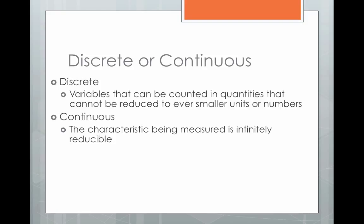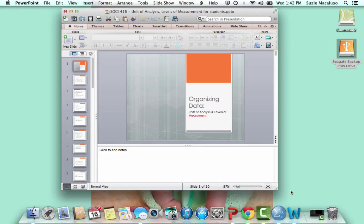Whereas continuous variables are something that's being measured as infinitely reducible, so you can have pieces and portions. Something like how tall are you — while we typically measure height in feet and inches in the United States, you can reduce that into fractions of an inch. That's the difference between discrete and continuous, and that's the end of our discussion today. Please make sure to complete the Google Doc for today's assignment, and I look forward to seeing you in class on Thursday.